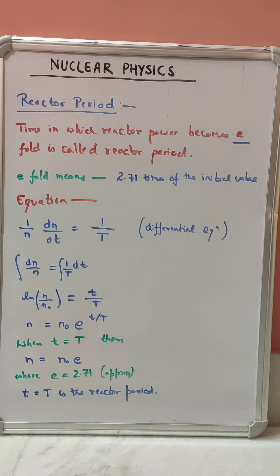So we can clearly call the small t when it becomes capital T equal to the reactor period. Capital T is nothing but the reactor period in the differential equation that we have seen earlier.